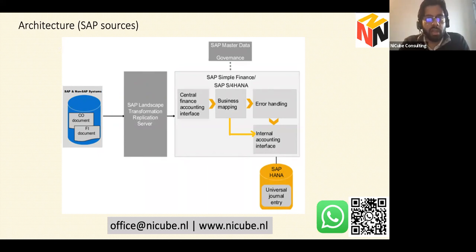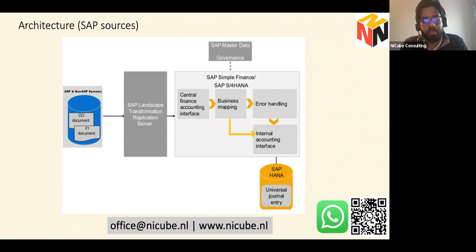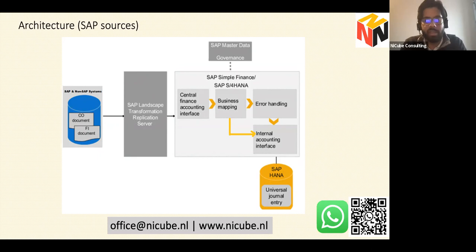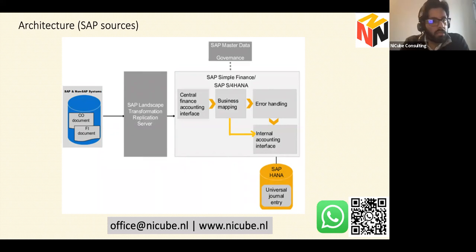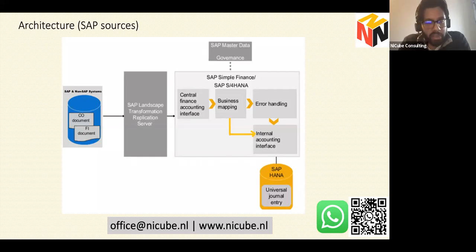On the S4 side, SAP provides six standard reconciliation reports. You execute them to see a detailed view: how many documents were posted in ECC, how many in S4, how many failed, and differences in currency or value. Master data governance — regardless of tool (SAP MDG or non-SAP) — is critical. If a vendor created in ECC is not replicated to S4 as a business partner, everything will fail in AIF.